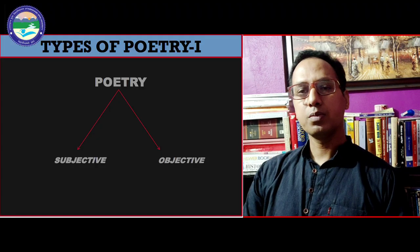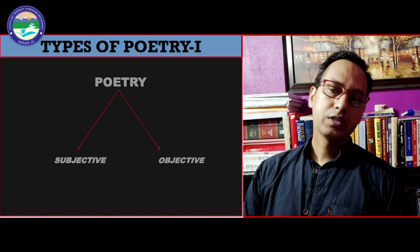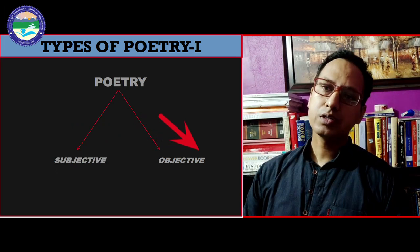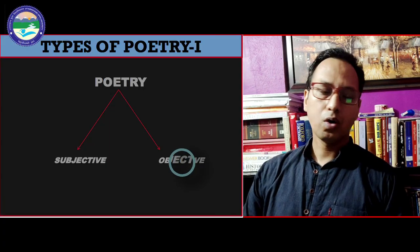So let us start with the topic: the lyric. Before we discuss the lyric, we must know about types of poetry in general — how many types of poetry there are. Students, we will come to know that there are basically two types of poetry: subjective poetry and objective poetry. Many students are still confused about what subjective poetry or objective poetry means, so let us discuss both types. Let us first take objective poetry.